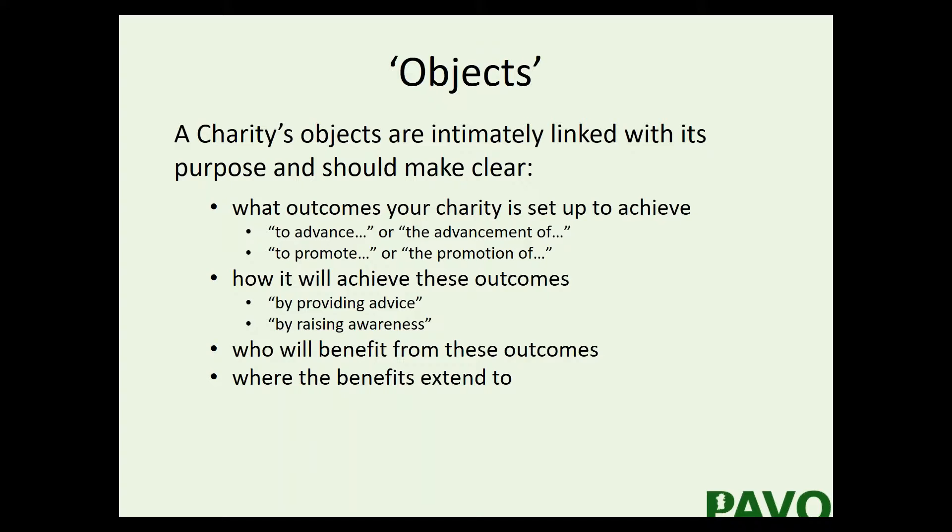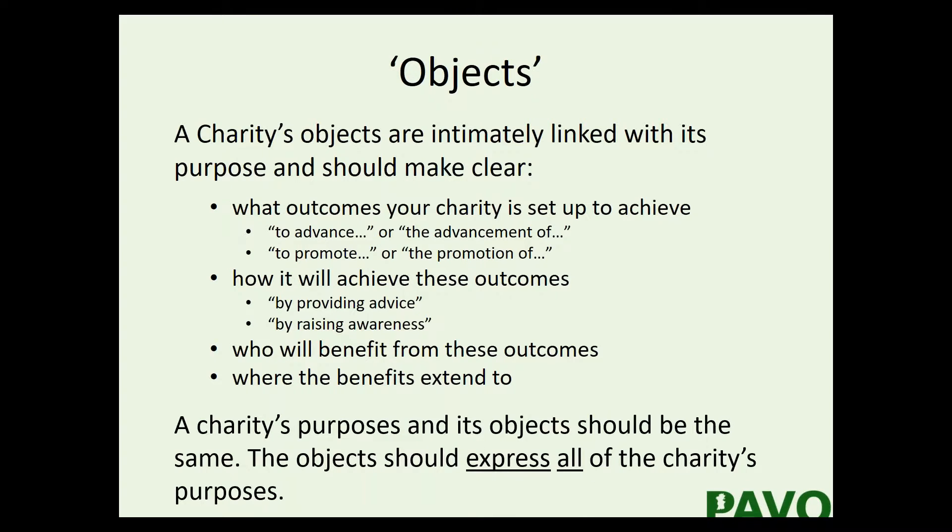The objects should also state who will benefit from the delivery of charitable purposes and how far those benefits extend - that could be a geographical area or a certain section of the community. You clearly have to define this and put it into your governing document, so that it regulates how you run the organisation in future. A charity's purposes and its objects should be the same - there should be no tension between the charitable purpose as understood by the Charity Commission and how you actually set out to deliver it.